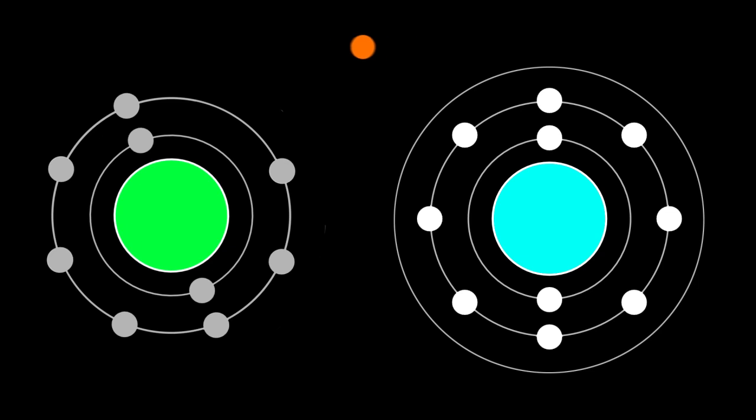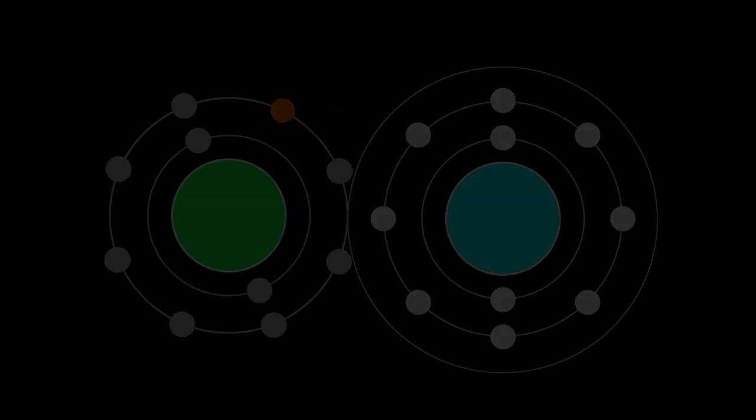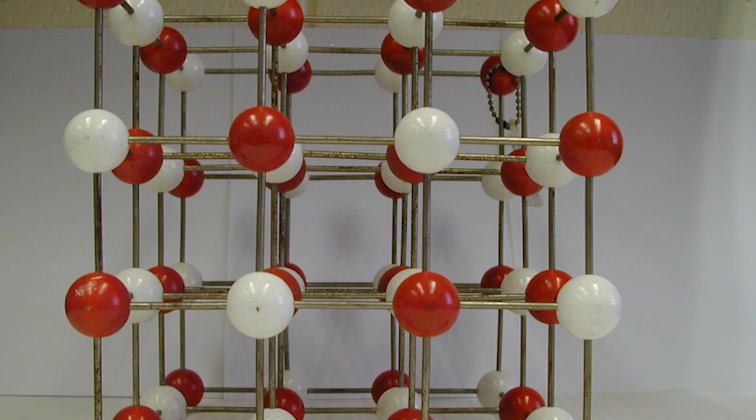A cation and anion form an electrostatic interaction which leads to the formation of an ionic salt. They appear as a 3D crystal lattice under the microscope.